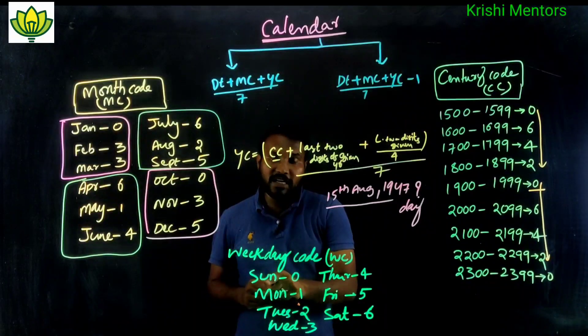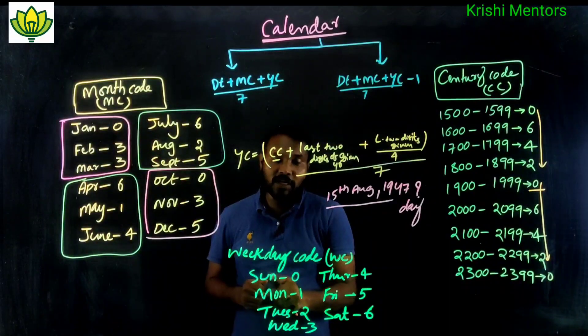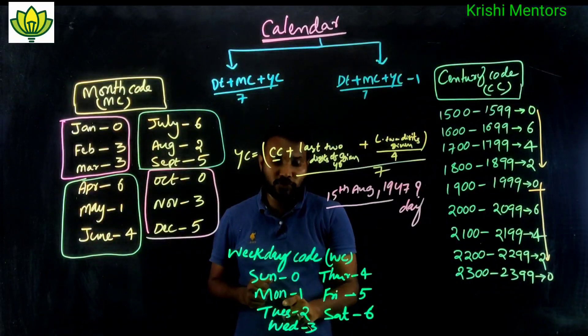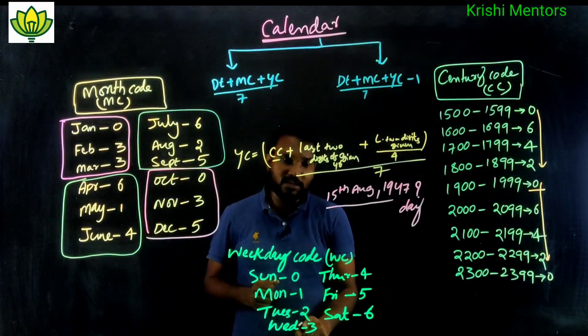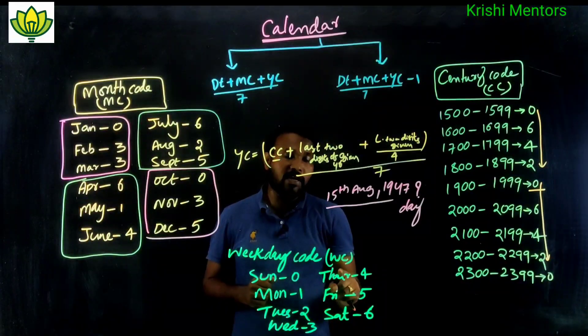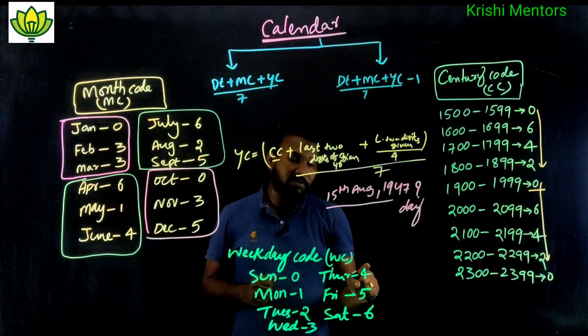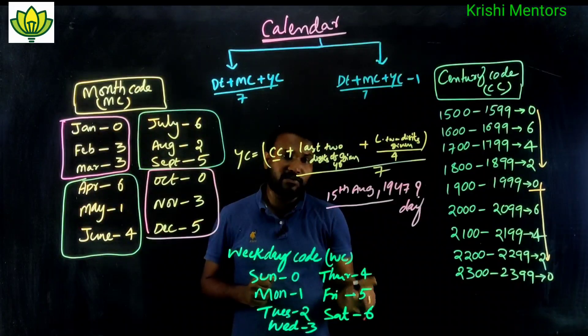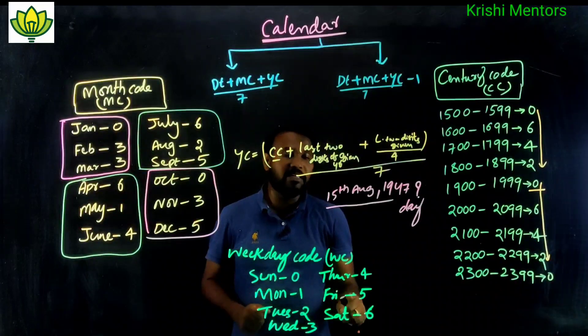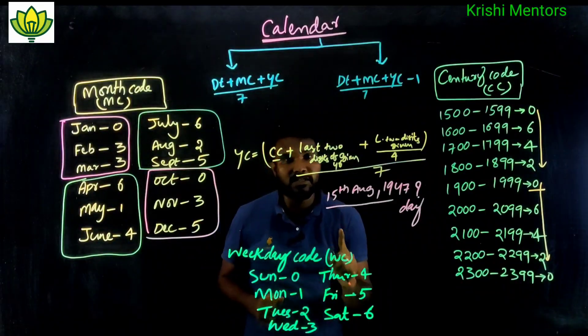The day codes are: Sunday = 0, Monday = 1, Tuesday = 2, Wednesday = 3, Thursday = 4, Friday = 5, Saturday = 6.